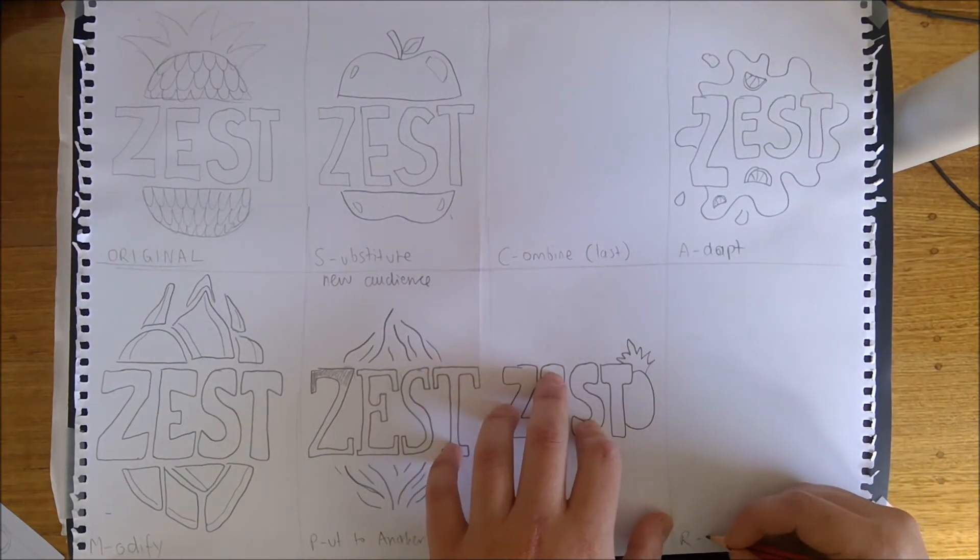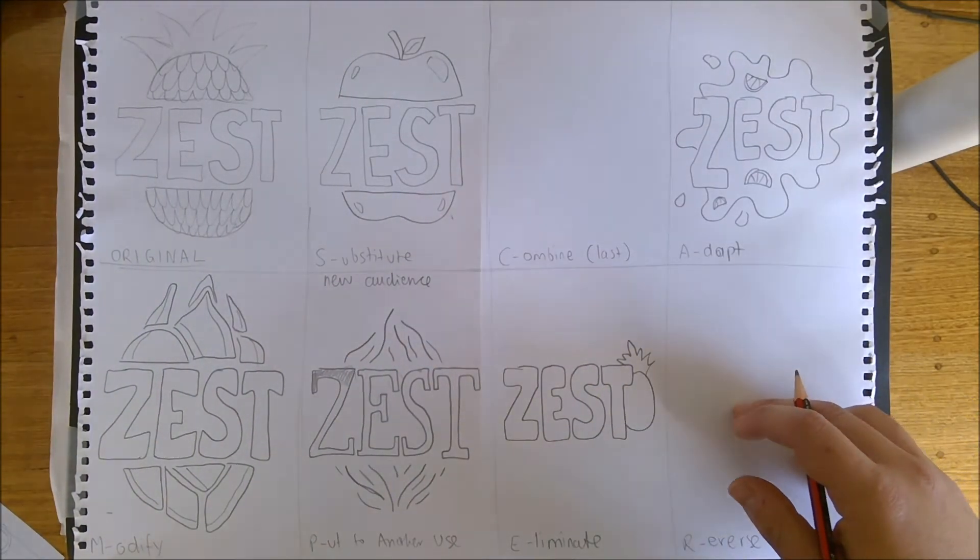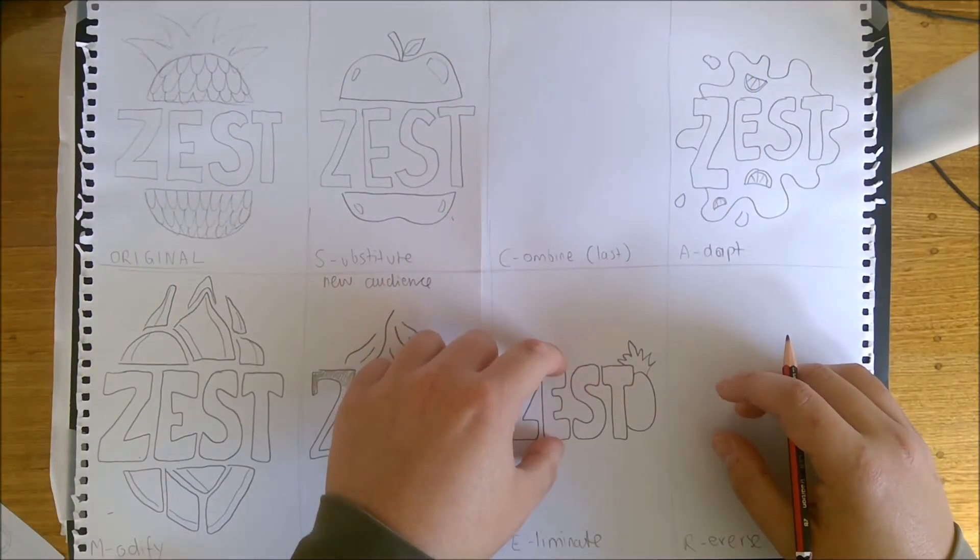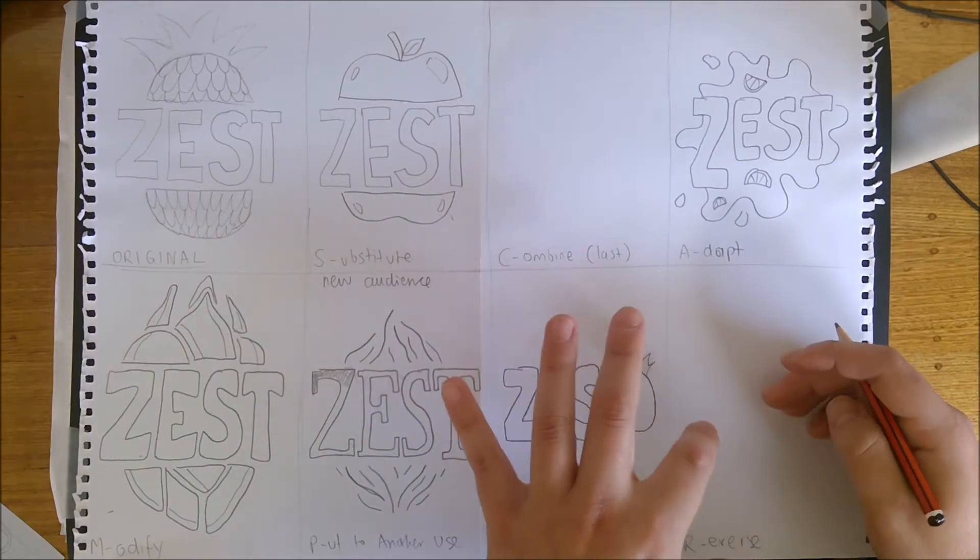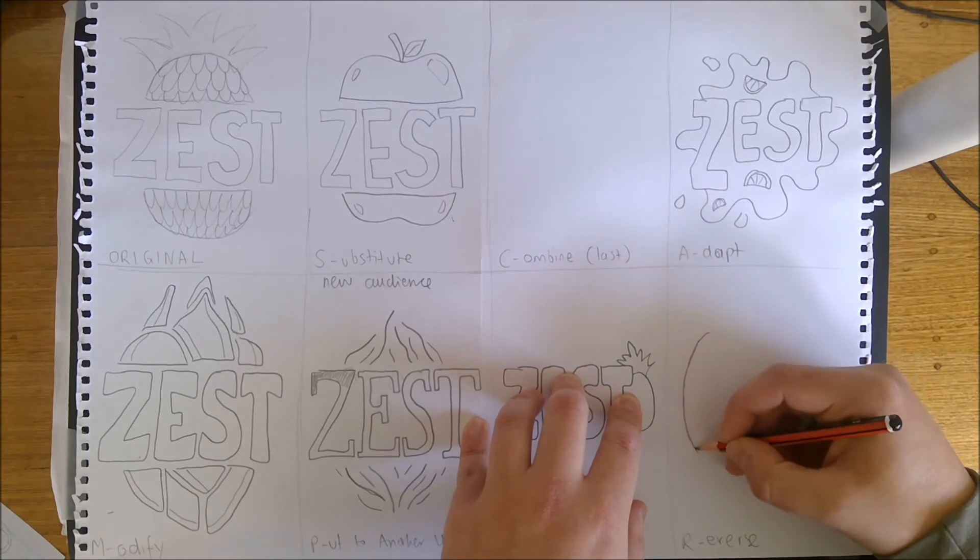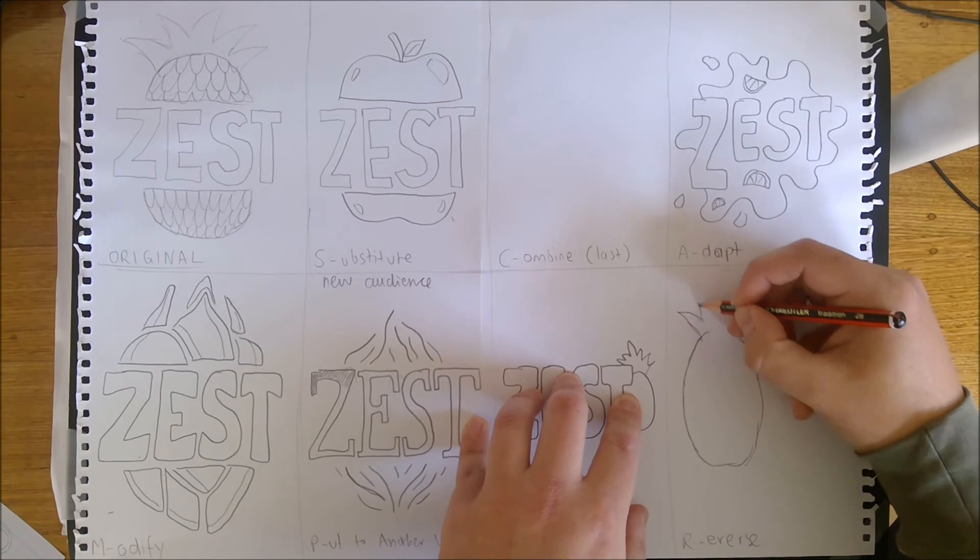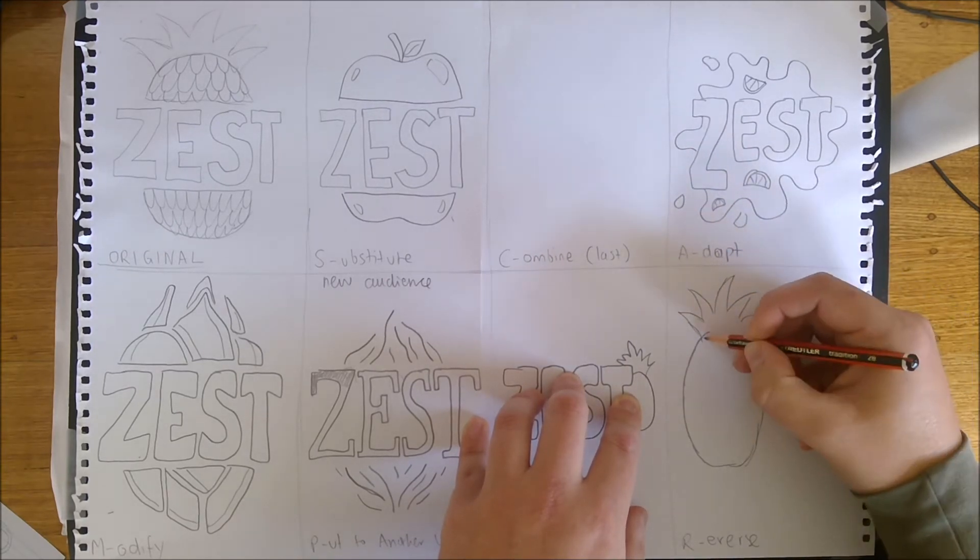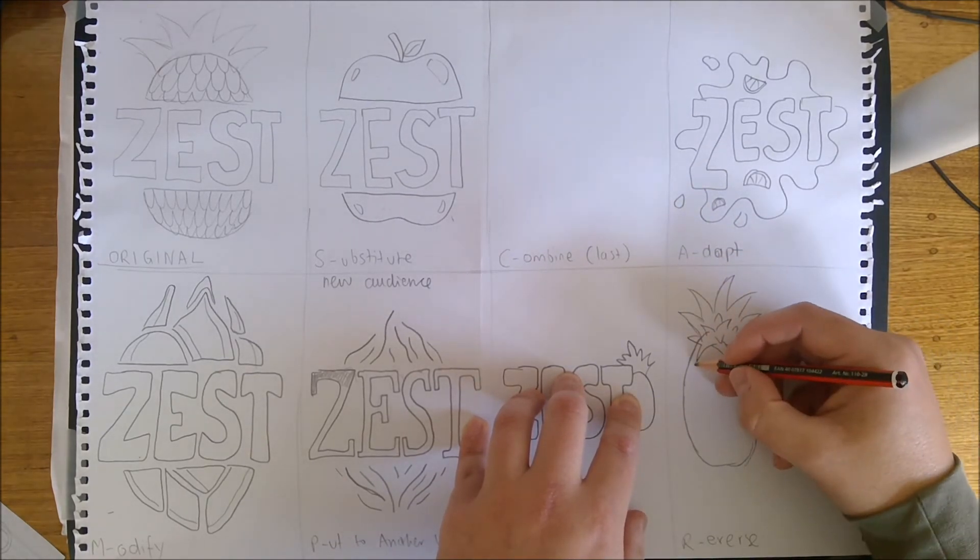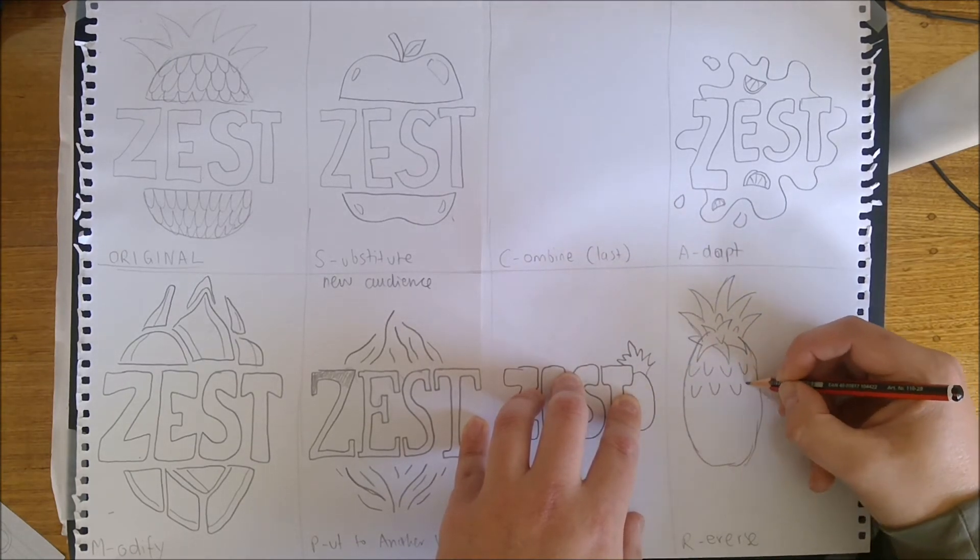R stands for reverse, and this can be a challenging one because it's asking you to reverse specific parts of your design. What I've done so far is I've emphasized the text within my design - in every single one, the text is the first thing we see. I'm going to reverse that and make the focus actually the fruit. So I'm going to draw a pineapple, really emphasizing it, providing it with detail. Might even add these lines in here for texture.